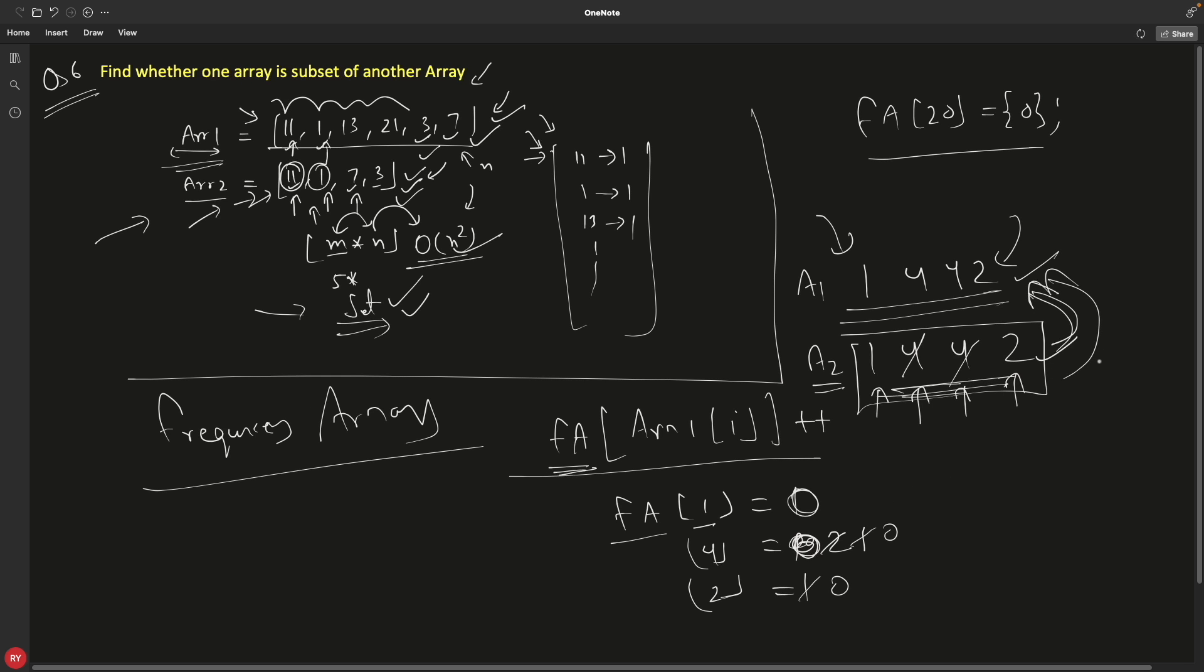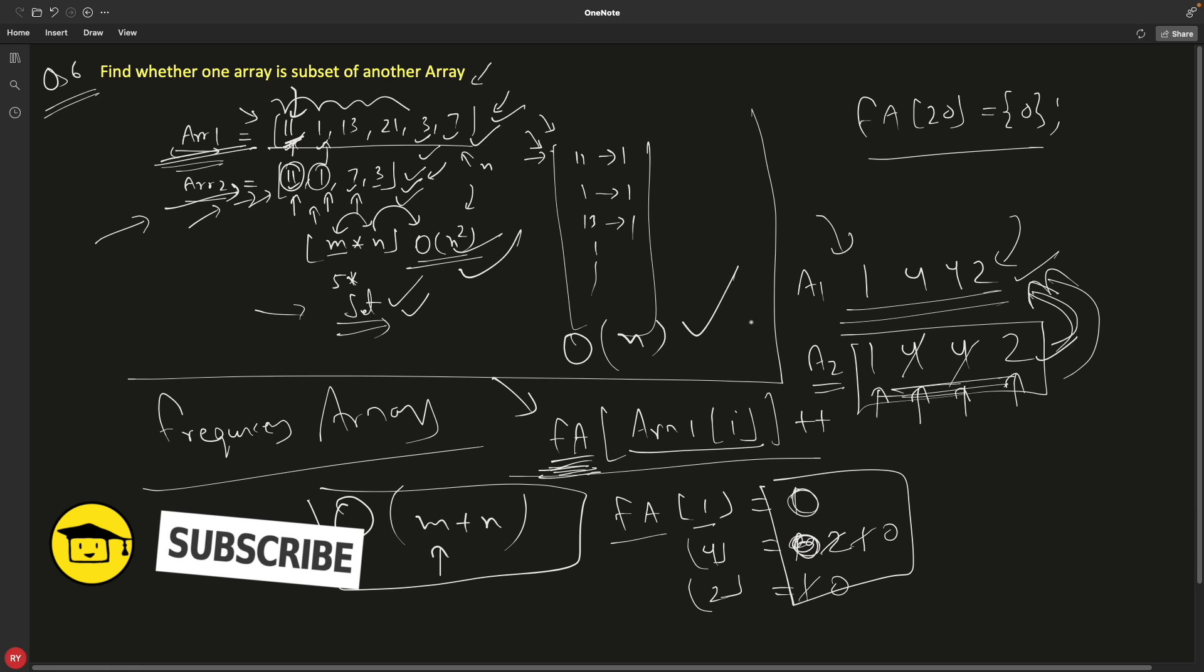This one is having a very good complexity: order of m plus n. See, you have to go for m times - if this is m - to just increment this frequency array for all the indices. So all these values are like indices for the frequency array. Don't get confused. So we'll go for m times just to increment all these, and then we'll go for n times just to verify that those frequency arrays are cool here. So this looks pretty good. So from n squared to m plus n, which is still order of n, this is a really good complexity.